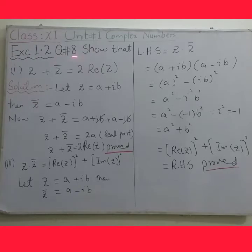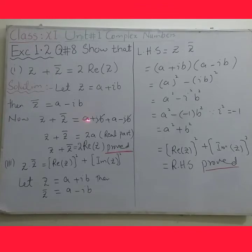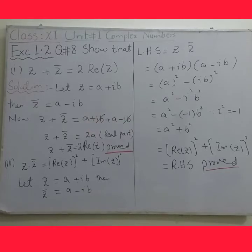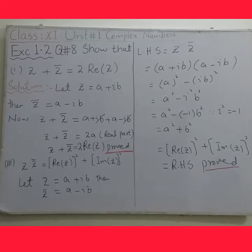Now for Part 2 of Question 8: students, you have to prove z minus z conjugate is equal to 2 times Imaginary(z). When you put the values, the real part a will cancel out and the answer will be 2·iota·b, which represents the imaginary part of z. So the required answer will come. For Part 2, do it yourself by looking at Part 1.